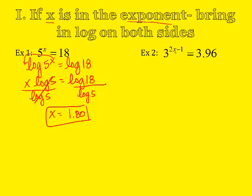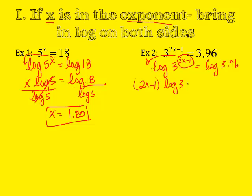Look at number two. x is in the exponent, so I need to take the logarithm of both sides. So the logarithm of 3 raised to the 2x minus 1 power equals the logarithm of 3.96. Power rule is going to move this guy out. So I'm going to divide by the logarithm of 3 first. And I plug this in the calculator, logarithm of 3.96 divided by the logarithm of 3. And I get a value of 1.25.